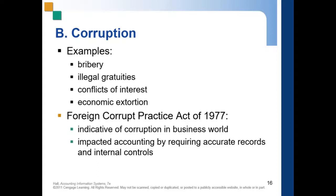We also have the Foreign Corrupt Practices Act of 1977, which is indicative of corruption in the business world. It impacted accounting by requiring accurate records and internal controls, in order to prevent corruption.